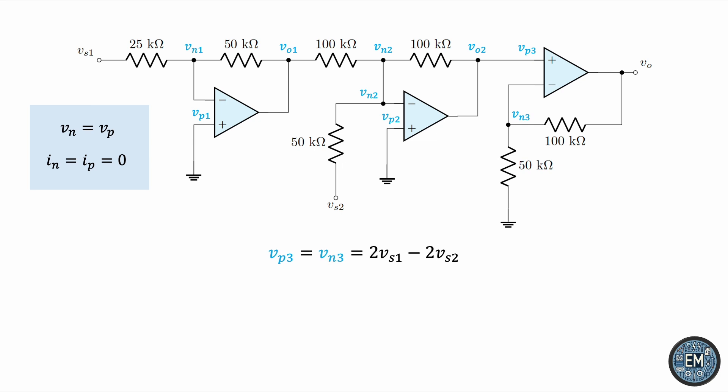And now, we'll write a KCL equation for a third time. We have this current entering the node, this current leaving the node. And again, no current enters the negative input of OPAM3 due to the second constraint equation for ideal OPAMs. So, this is the nodal equation. We can multiply both sides by 100. Let's take VN3 to the other side, giving us negative 3VN3. So, the output voltage VO is 3 times VN3. Let's substitute the expression we have for VN3, and this completes the analysis.